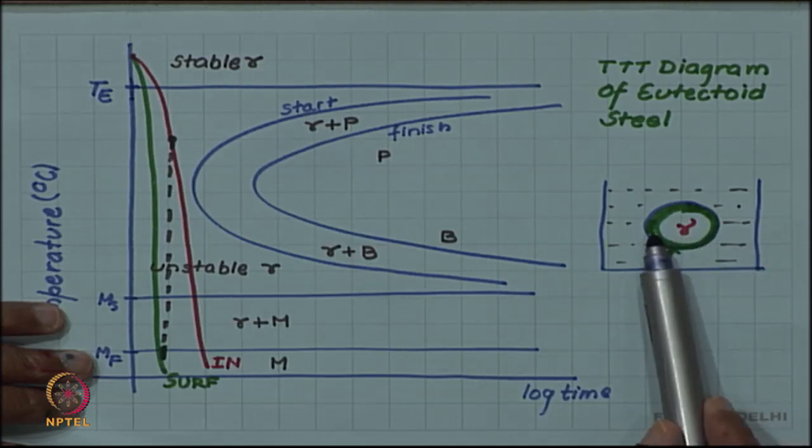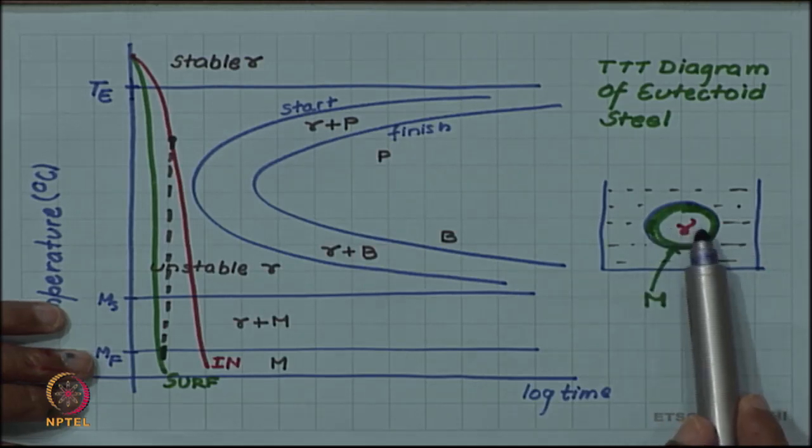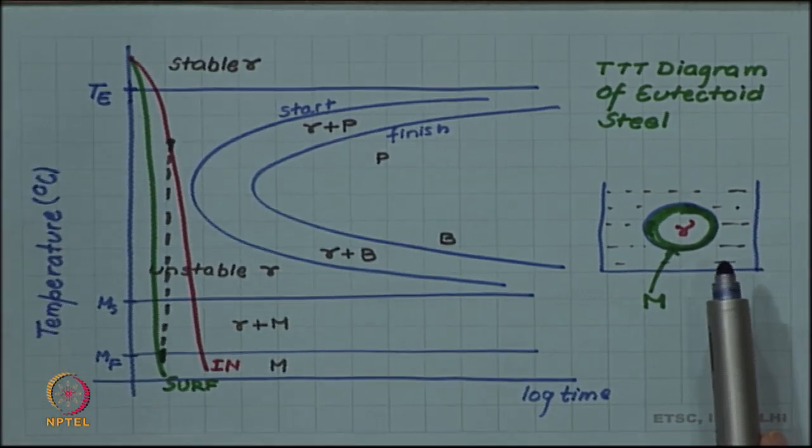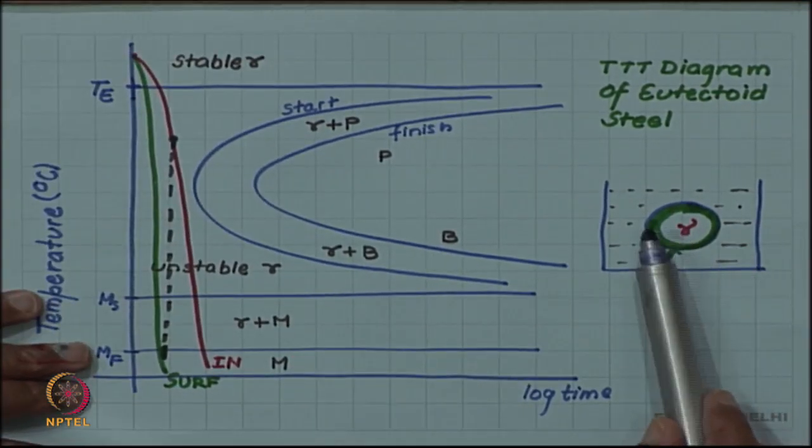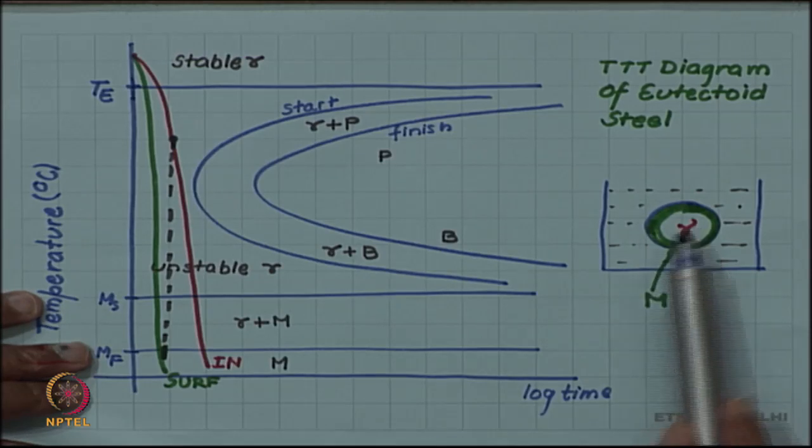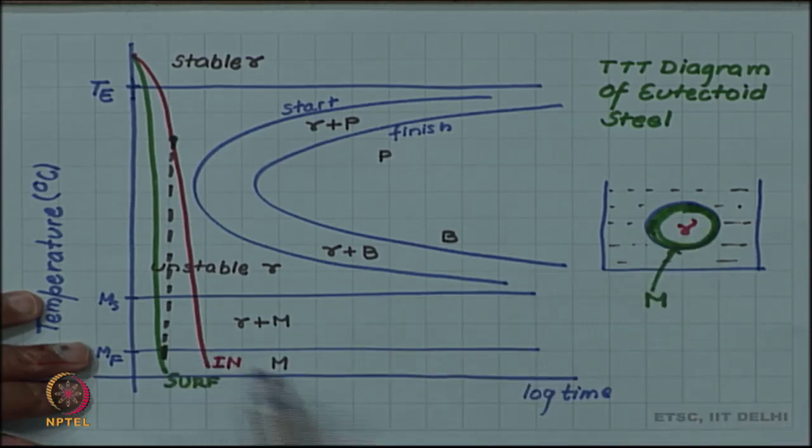The surface transformed first and subsequently the inside transformed. If we can somehow equalize the temperature of surface and inside, then this problem can be removed.